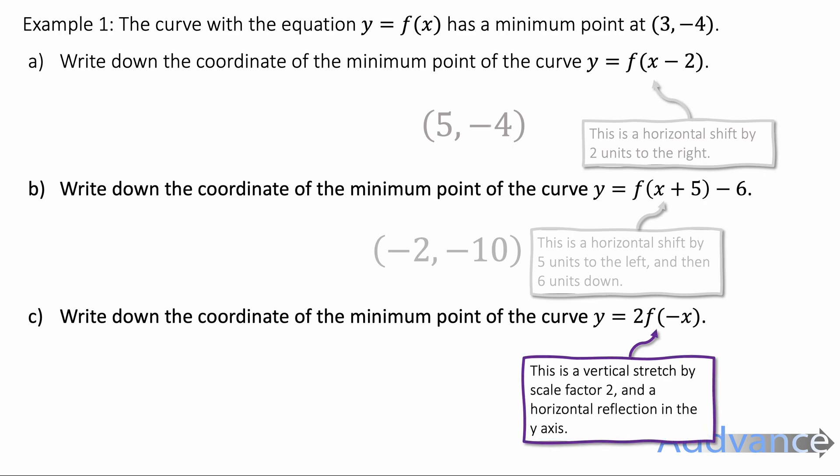And then finally we've got y equals 2 f of minus x. And this is a vertical stretch by scale factor 2 and then it's a horizontal reflection in the y axis. So the y coordinate will double and the x coordinate will become negative. It will reflect. So we get minus 3 minus 8. The x coordinate has become negative and the y coordinate has doubled.